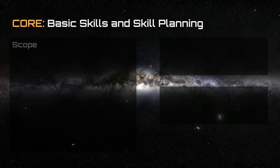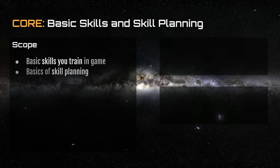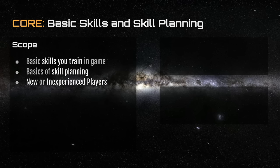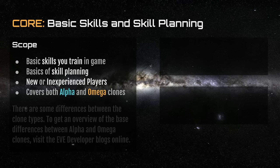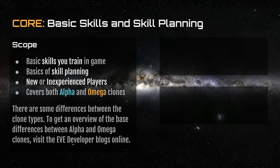Basic Skills and Skill Planning. The scope of this class is to cover the basic skills you train in-game and the basics of skill planning and skill queuing. This class is designed for new or inexperienced players, or those returning after a long absence, and covers both Alpha and Omega Clones. Alpha Clones replaced the old 21-day trial — you can now play for free without a subscription. If you'd like to know more about the differences, please visit the EVE developer blogs online.